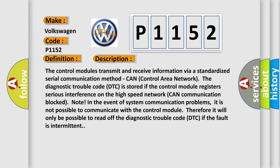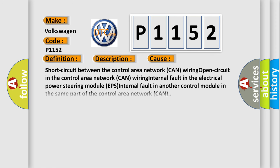In the event of system communication problems, it is not possible to communicate with the control module. Therefore, it will only be possible to read off the diagnostic trouble code DTC if the fault is intermittent. This diagnostic error occurs most often in these cases.